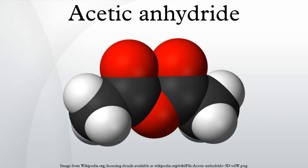Structure and properties: Acetic anhydride, like most acid anhydrides, consists of flexible molecules with non-planar structures. The pi-system linkage through the central oxygen offers very weak resonance stabilization compared to the dipole-dipole repulsion between the two carbonyl oxygens. The energy barriers to bond rotation between each of the optimal aplanar conformations are quite low.